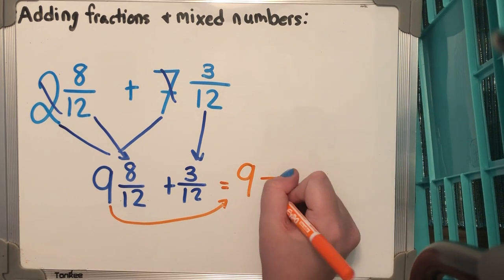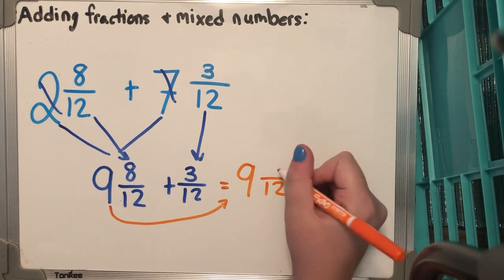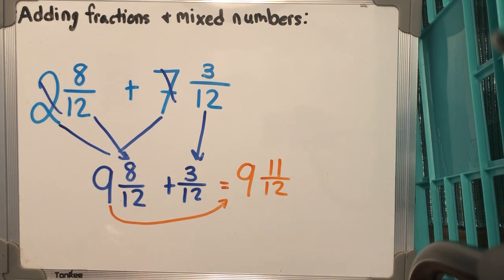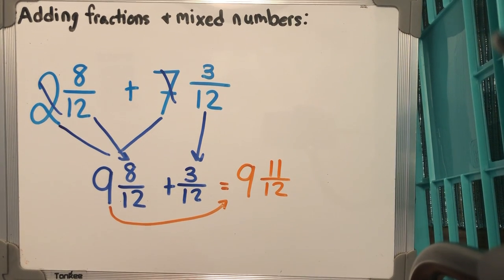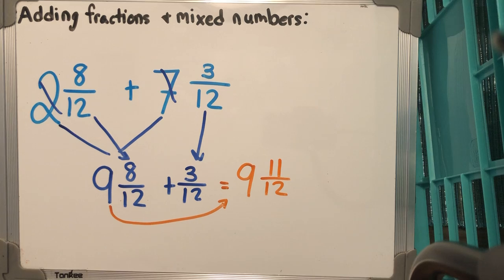Now, all I have to do is add 8 + 3, which is 11, and put it over 12. So now I got 9 11/12.